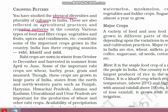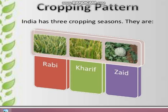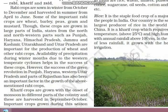The major cropping seasons of India are Rabi, Kharif, and Zaid. India has three cropping seasons: Rabi, Kharif, and Zaid. I have already given notes on Zaid — you can refer to those. You can also make a tabular form with three subheadings: season, crops grown, and the areas where they are grown majorly.